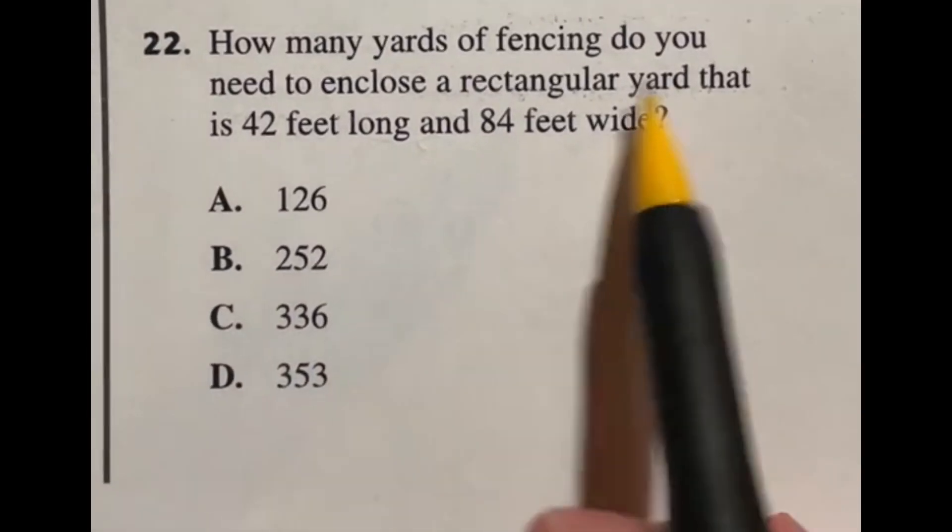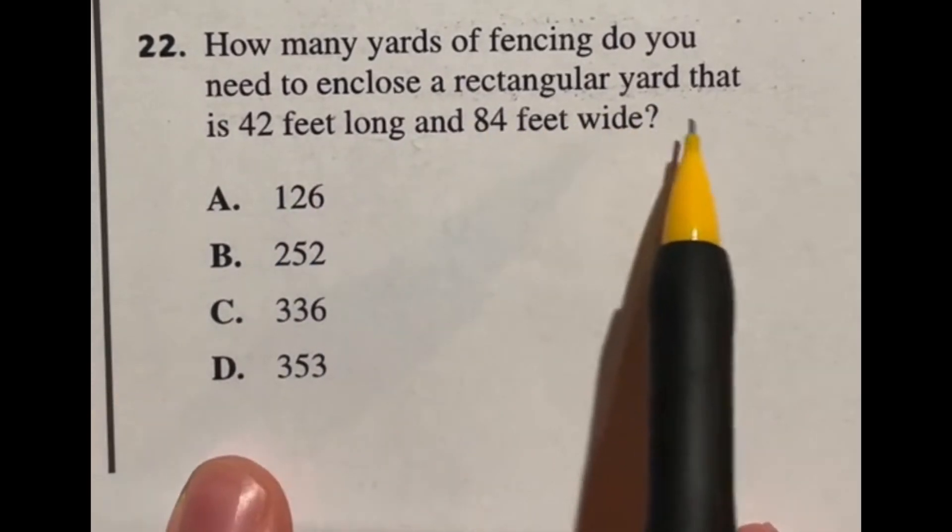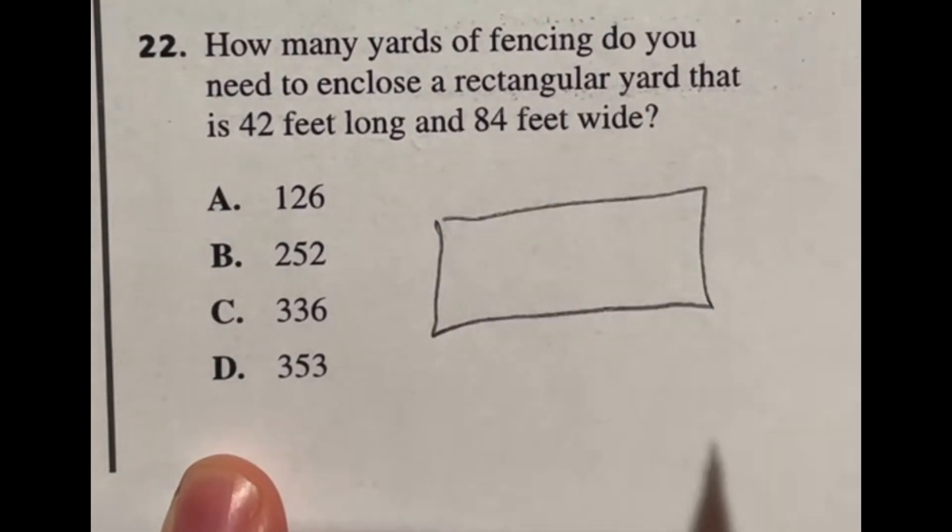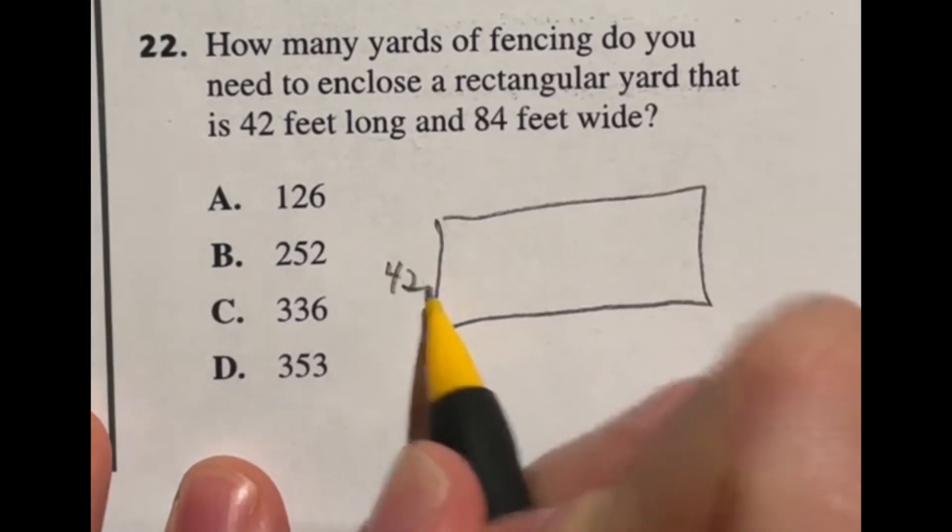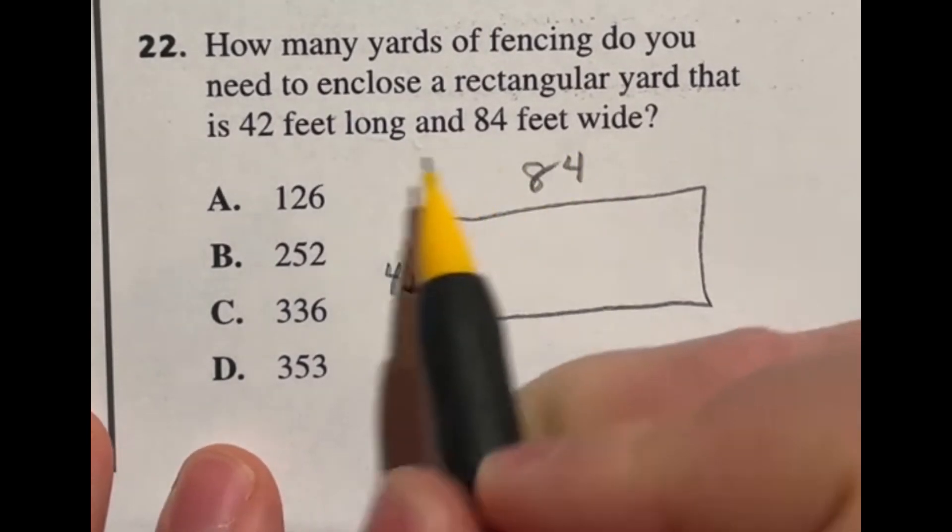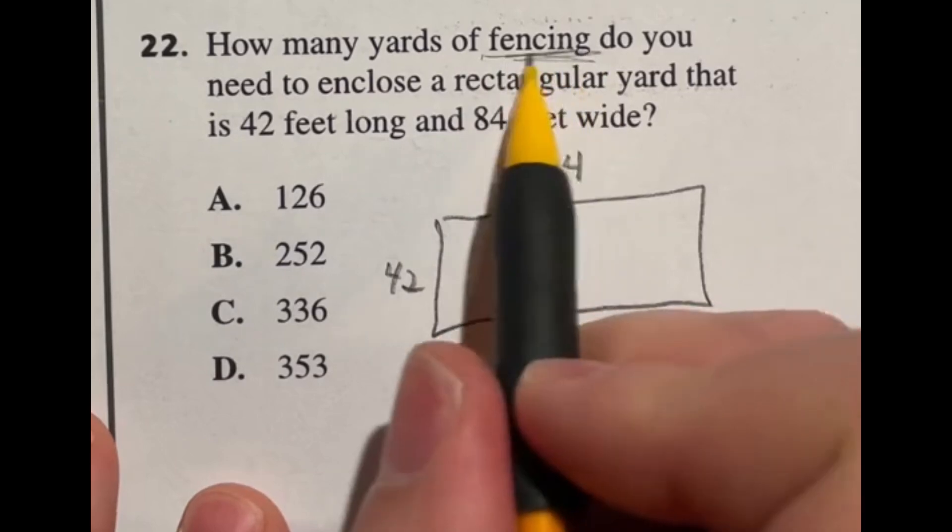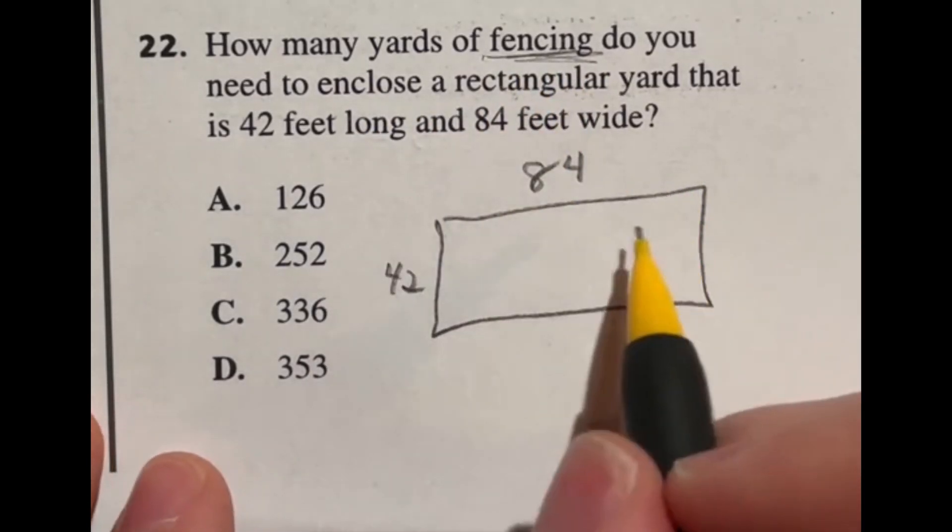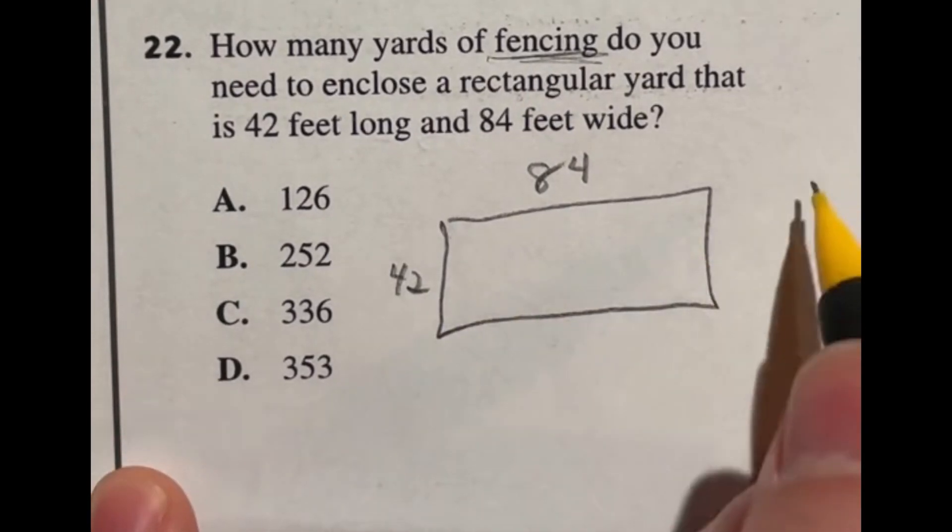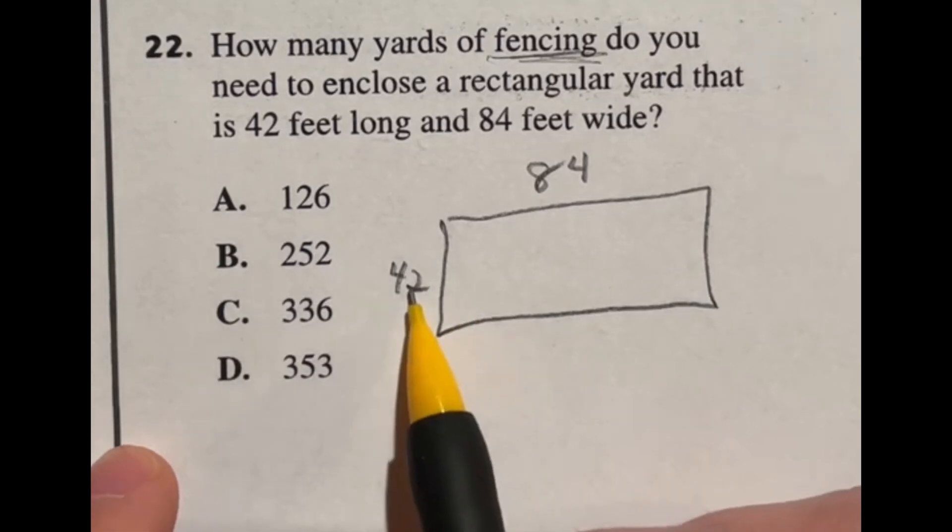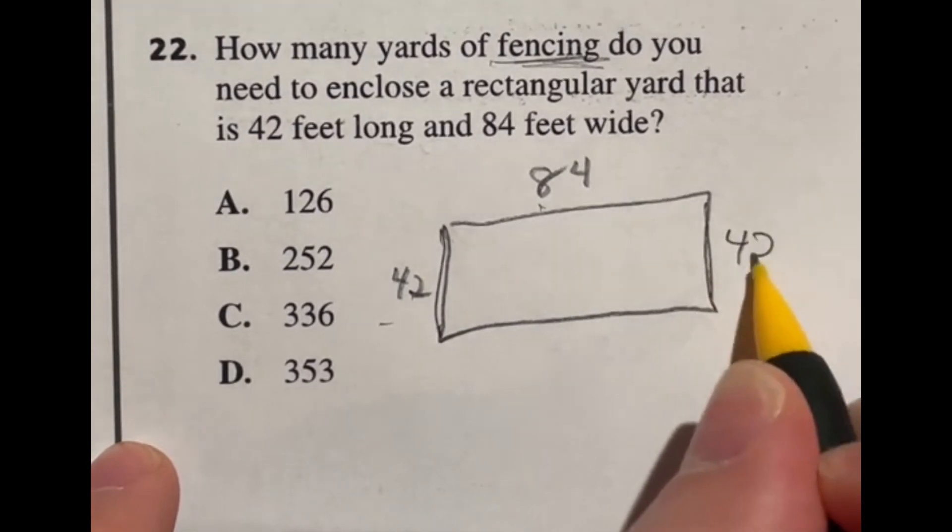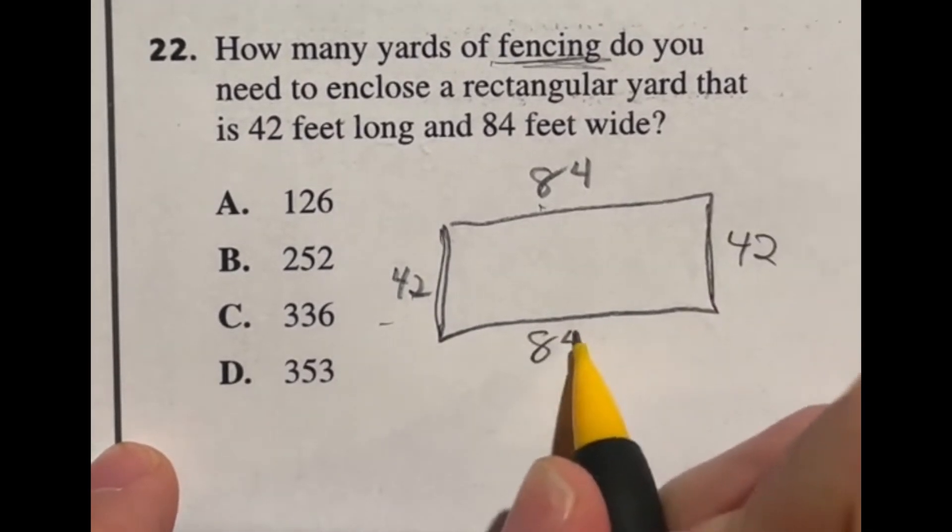How many yards of fencing do you need to enclose a rectangular yard that is 42 by 84 feet long? So in this case I'm looking at 42 on my short side, 84 on my wide side, and they want to know how much fencing you need to enclose the rectangular yard. I went ahead and drew this out to remind us that if I want to fence around the whole thing I'm going to need to double each one of these numbers because I got this fence over here and this fence over here. So we got 42 over here as well and another 84 here.